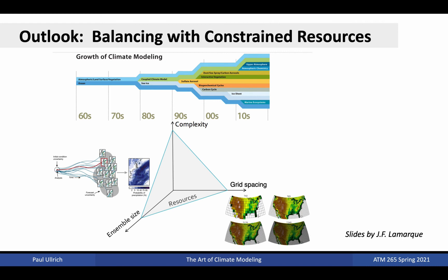Global climate and Earth system models have become increasingly complex over the past 60 years. This is a trend that is not anticipated to end anytime soon, as we continue to seek a deeper understanding into all aspects of the Earth system. Although computational power has increased exponentially, we have had no problem meeting that capacity through more complex models, more ensembles, and finer model grid spacing. This has enabled us to reduce uncertainties, better understand the interactions and feedbacks that exist in the Earth system, and better capture fine-scale processes and extremes.